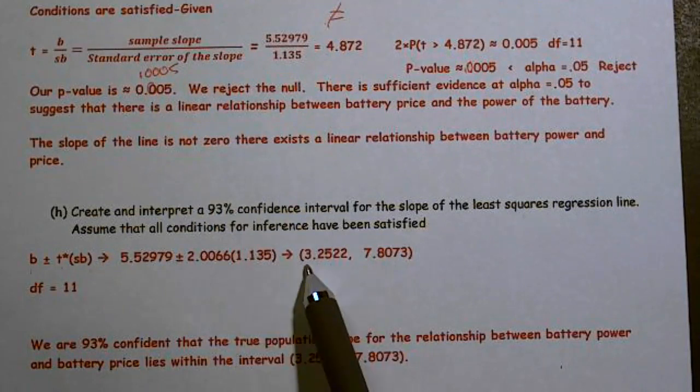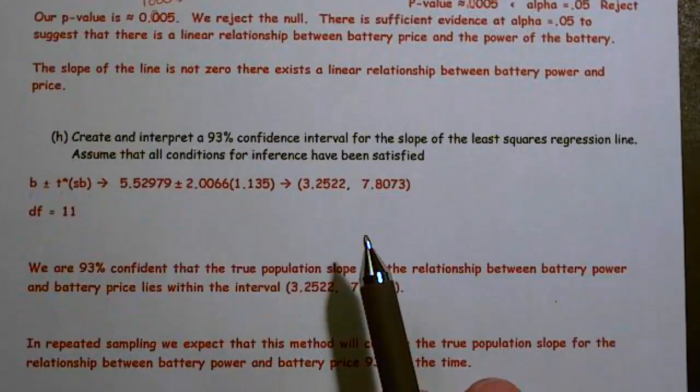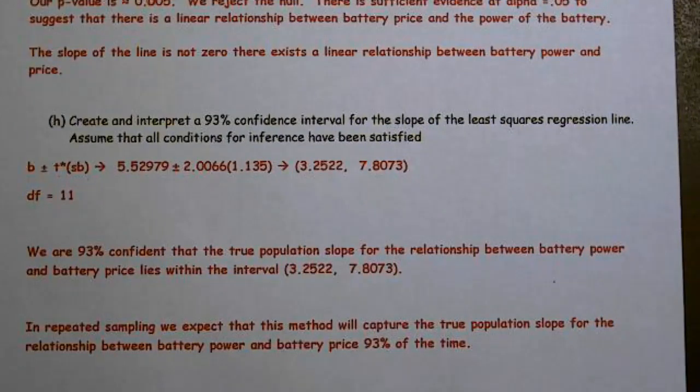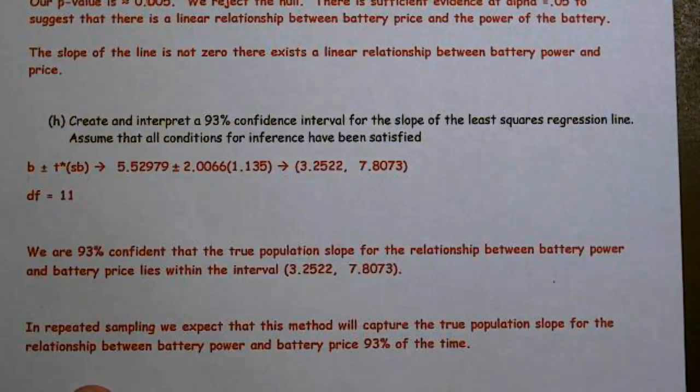And we are 93% confident that the true population slope for the relationship between battery power and battery price lies within this interval. They did not ask for this, but you should do it anyway. In repeated sampling, we expect that this method will capture the true population slope for the relationship between battery power and battery price 93% of the time.